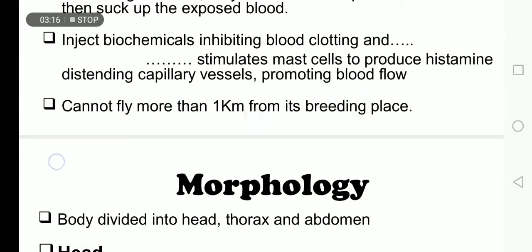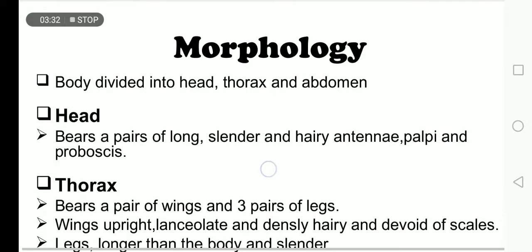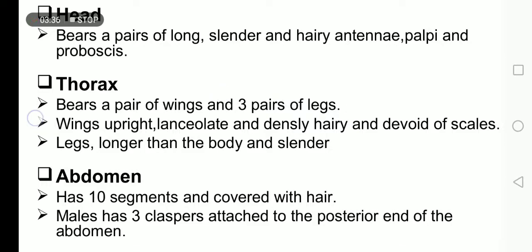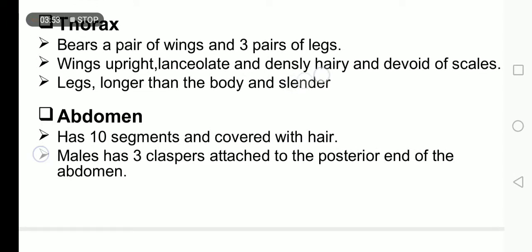These insects cannot fly more than one kilometer from their breeding places. Morphology: the body is divided into head, thorax, and abdomen. The head bears a pair of long, cylindrical, hairy palpi and a proboscis. The thorax bears a pair of wings and three pairs of legs. Wings are upright and lanceolate. The abdomen has ten segments covered with hair.